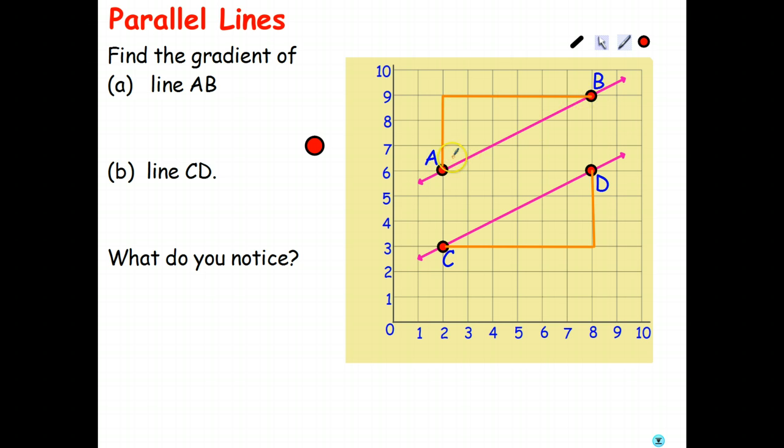The rise for this line is 1, 2, 3. The run is 1, 2, 3, 4, 5, 6. And therefore the gradient of line AB.